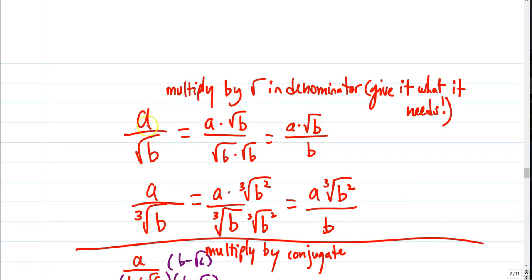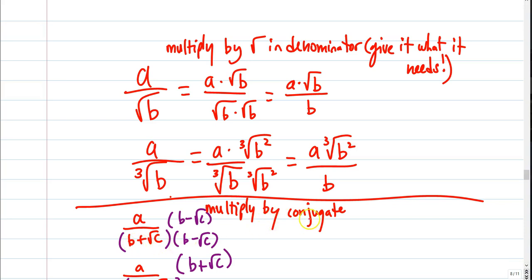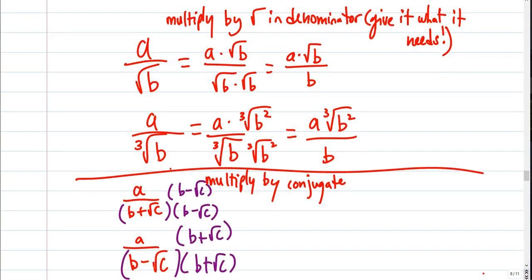So to summarize: if I have a over root b, multiply top and bottom by another radical b so the bottom becomes b — no radical in the denominator. If it's a cube root, give it what it needs — two more so it has a group of 3. Always do that to the top as well. If I have b plus a radical in the denominator, multiply by the conjugate b minus. If I have b minus a radical, multiply by b plus. This is a summary of all the simplifying rules for this section — I would write this on a note card.